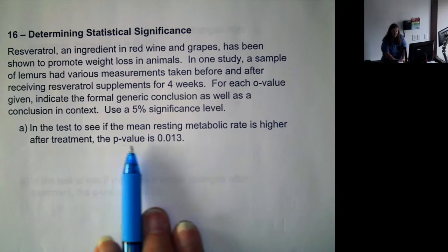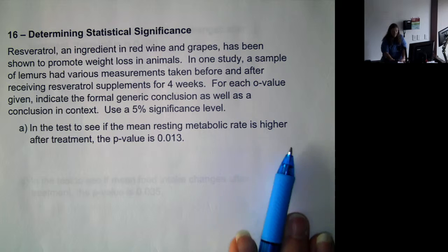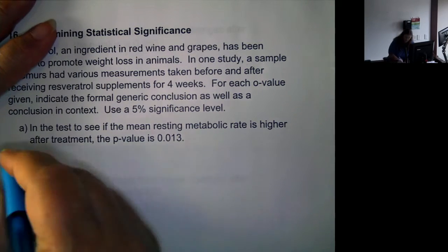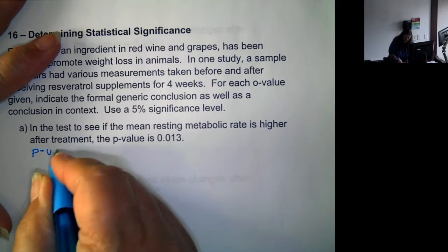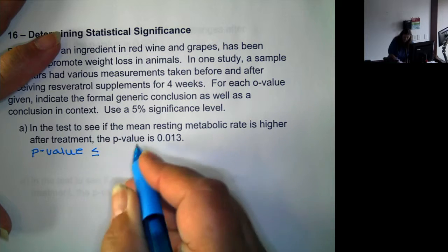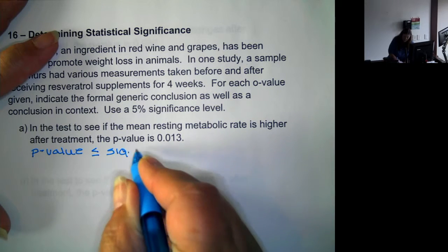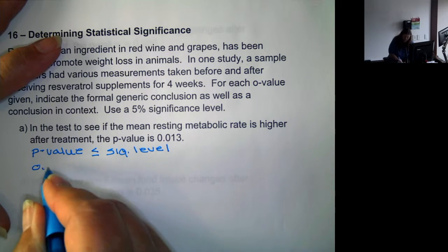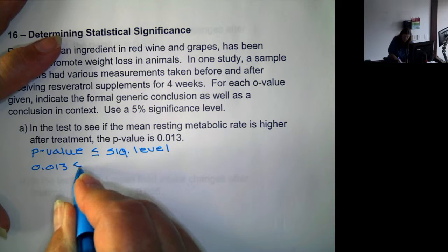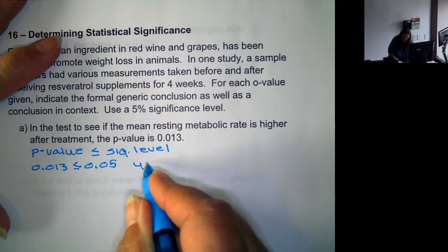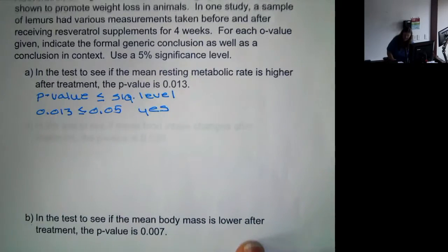In the test to see if the mean resting metabolic rate is higher after treatment, the p-value is 0.013. So what we need to do is compare to see if the p-value is less than or equal to the significance level. So in this case is 0.013 less than or equal to 0.05. The response is yes.